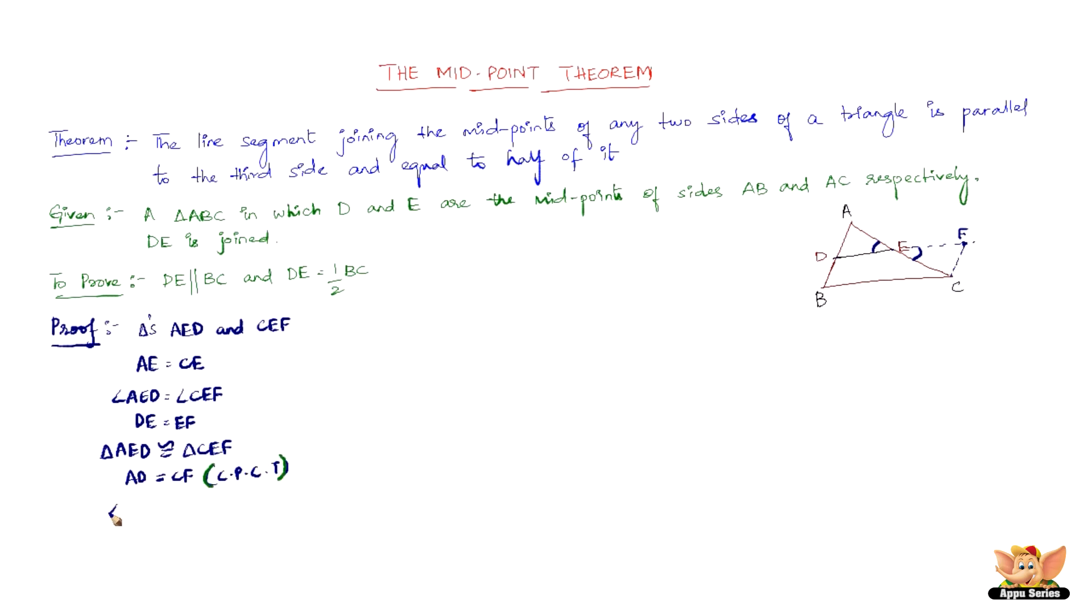And we also have angle ADE equal to angle CFE. The reason being the same - CPCT, corresponding parts of congruent triangles are equal. Now, D is the midpoint of AB, so we have AD equals DB, and we also have DB equals CF.